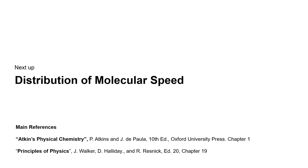In the last slide we have seen the limitations of the simple monoatomic ideal gas model. In the next lecture we will be looking at Boltzmann statistics and the distribution of molecular energies and molecular speed. For the content of this lecture I recommend Atkins' Physical Chemistry, in particular Chapter 1, and The Principles of Physics, in particular Chapter 19. See you next time.